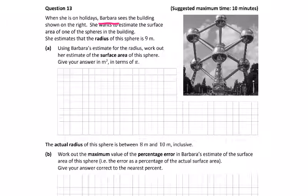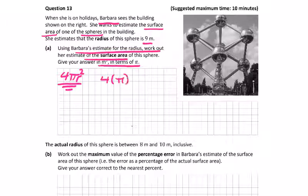Question 13: We've gone from Horcruxes to these spheres, and Barbara wants to estimate the surface area. If you don't know the surface area of a sphere, you go to the formula booklet: 4πr squared. This is surface area of a sphere. She estimates the radius to be 9 meters. Using Barbara's estimate for the radius, work out her estimate of the surface area. Give your answer in meters squared in terms of pi. So we need pi alone: 4 times pi times 9 squared is 324π meters squared.